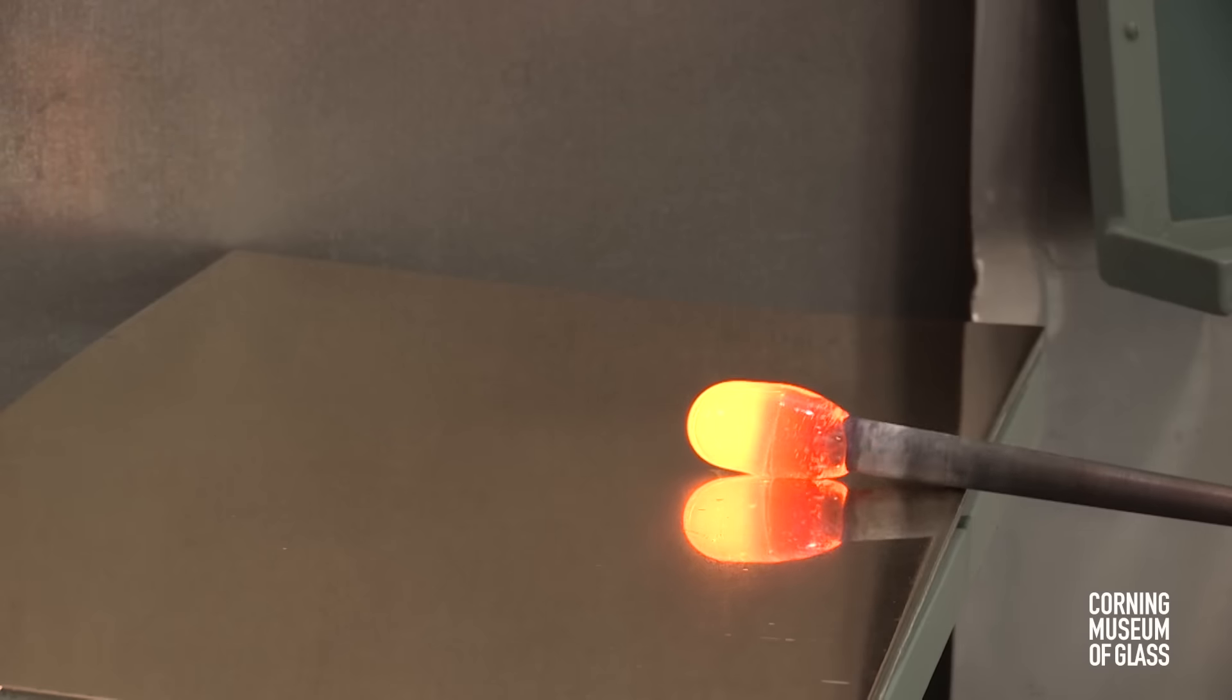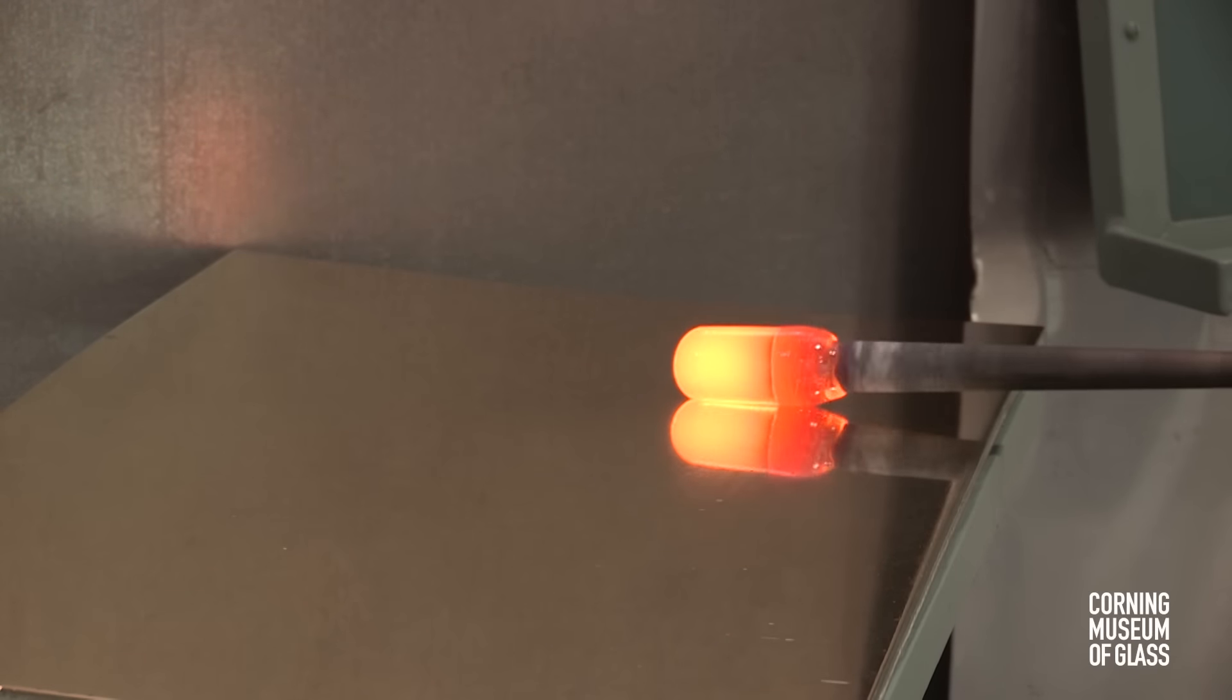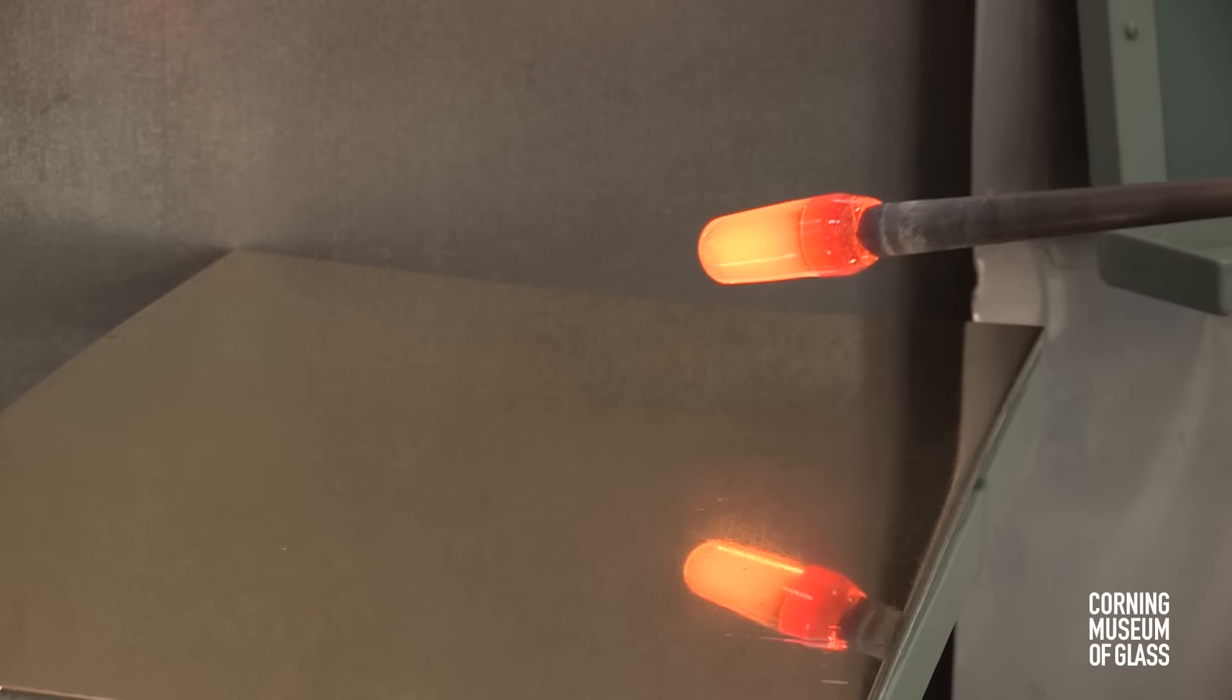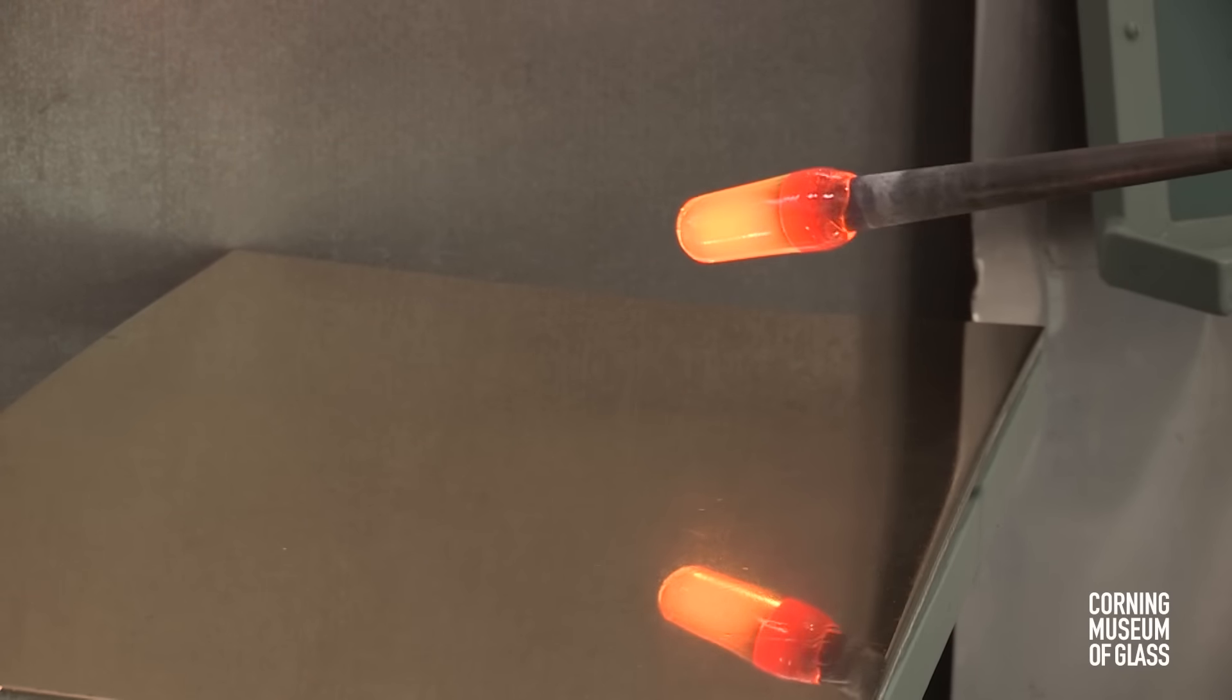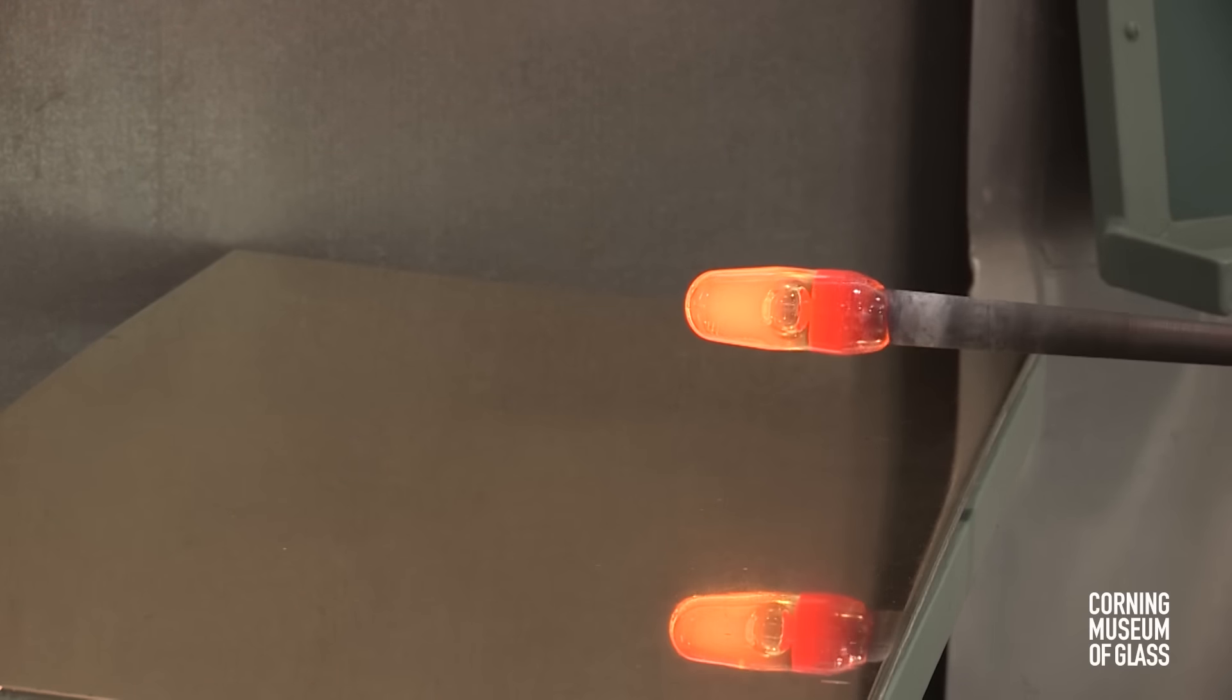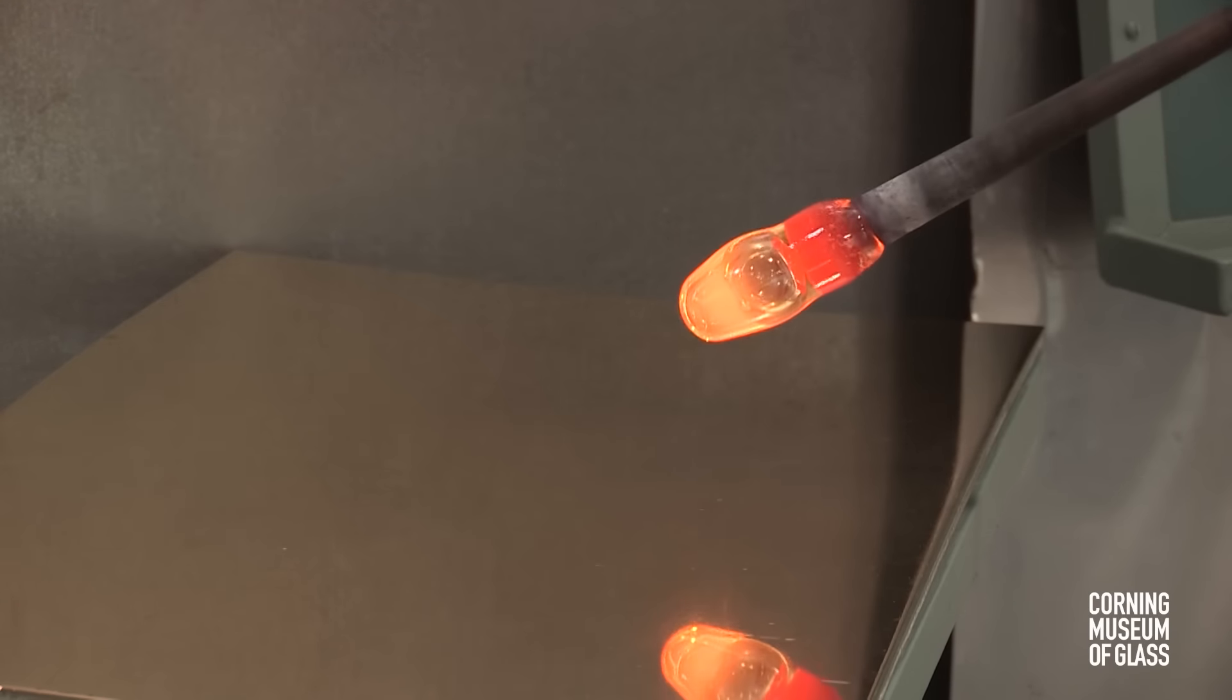The glass is gently rolled back and forth on the metal table, called the marver. This makes the gather slightly tapered, elongated, and perfectly concentric with the blowpipe. Air is blown in, and the bubble forms.